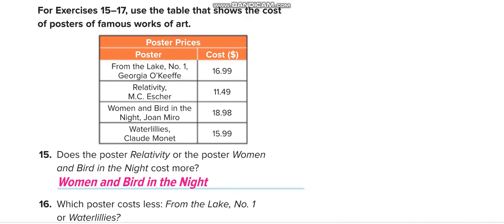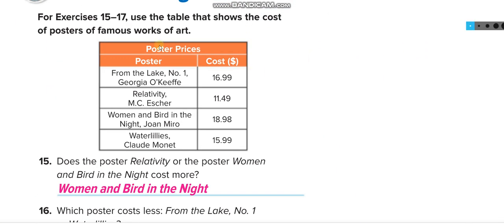Okay, what's next one? Here, for exercises 15 to 17, use the table that shows the cost of posters of famous works of art. Does the poster Relativity, this one, Relativity $11.49, or the poster Woman and Bird, this one, Woman and Bird in the Night, cost more? Which one cost more, guys? This is 18, this is 11, of course the Woman and Bird in the Night.